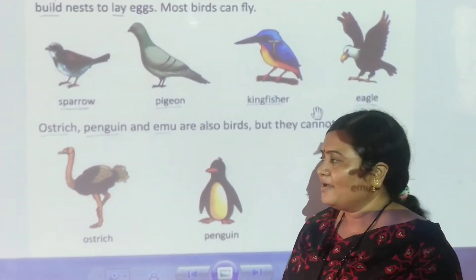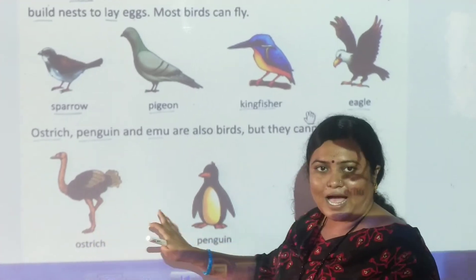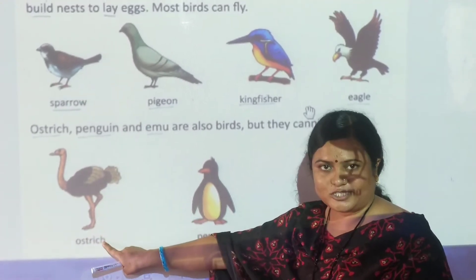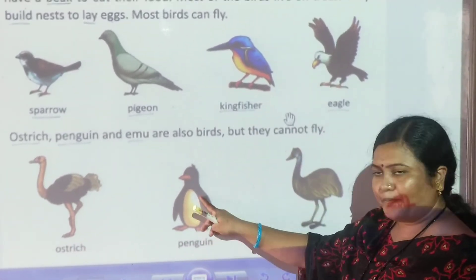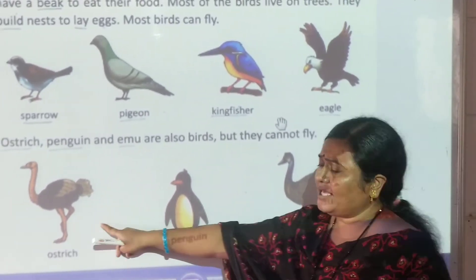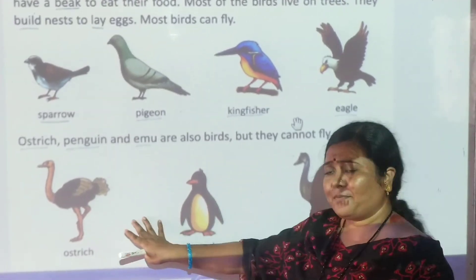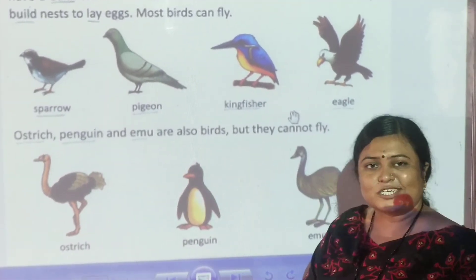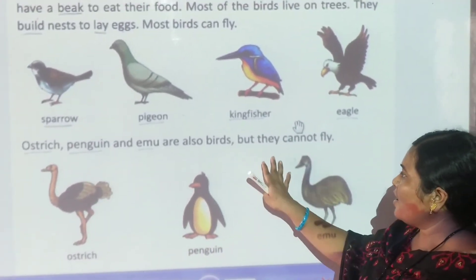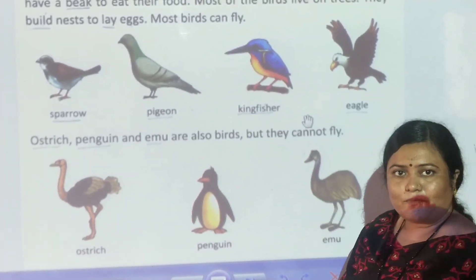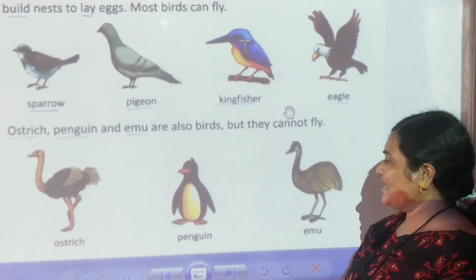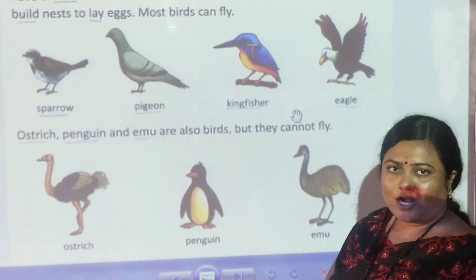But they cannot fly. The examples given here — ostrich, penguin, and emu — are birds, but they cannot fly. Ostrich, penguin, and emu are examples of birds. They cannot fly.